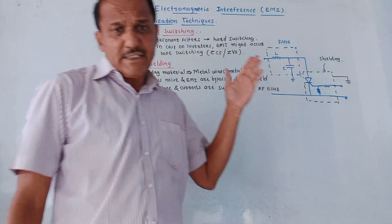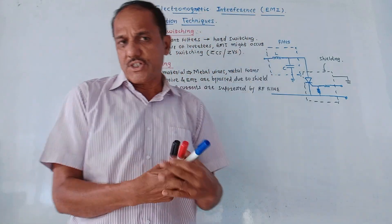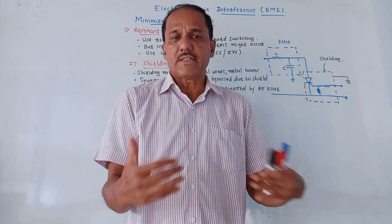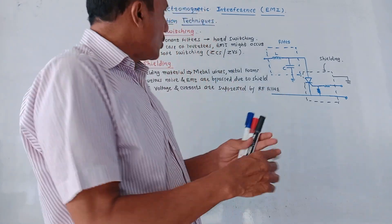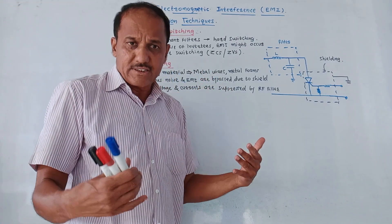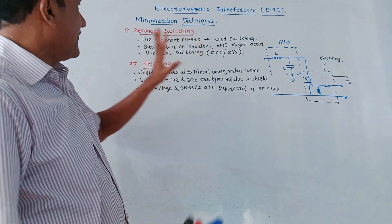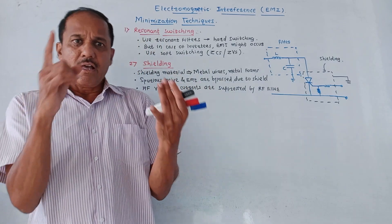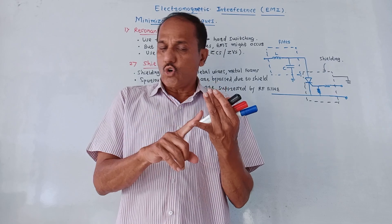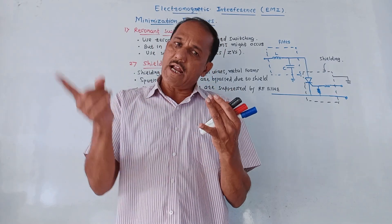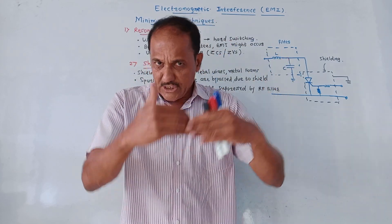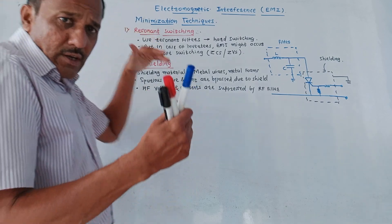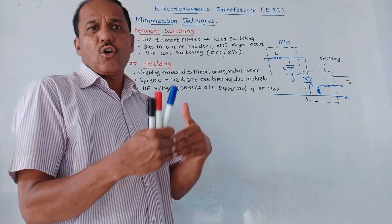Next: what are the minimization techniques for EMI, or how to minimize electromagnetic interference? Electromagnetic interference takes place majorly due to high switching actions. There are certain methods available by which we can reduce down the effect of EMI. First is resonant switching — you can make use of resonant switching. Resonant switching is basically zero-crossing switching, in which we have zero current switching and zero voltage switching. Whenever current or voltage crosses the zero line, then only the switching action takes place.